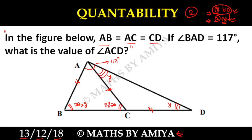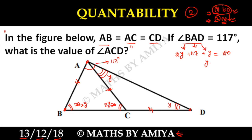If you work with a single variable the question is easier to solve. So here we have 2Y and here we have Y. In triangle BAD, angle B equals 2Y, angle A (given) is 117 degrees, and angle D is Y. The sum of all three angles is 180 degrees, so from here we can say Y equals 21 degrees.